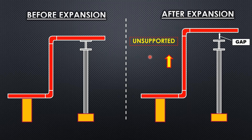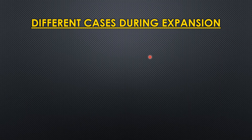This creates a scenario where the line is not stable because it has become unsupported. In such situations, to manage the balancing of the line, manage the load, and provide support — spring supports are used.